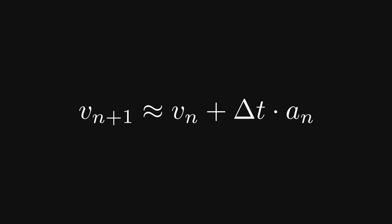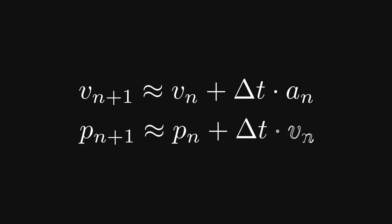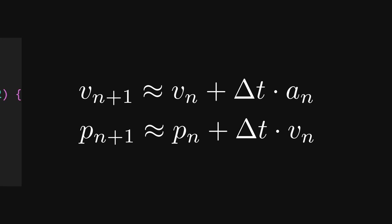Doing a similar derivation with the fact that velocity is the derivative of position, we end up with these two equations. And we can put them to use in a function for the bodies called update.